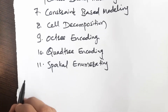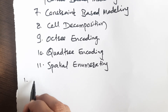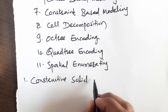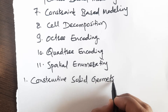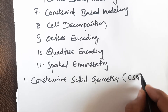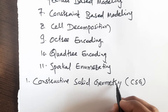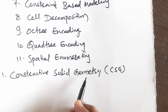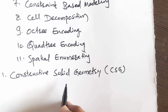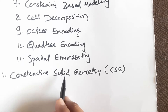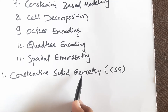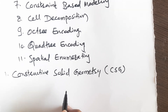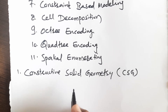The first method is Constructive Solid Geometry, also known as CSG. Constructive Solid Geometry is one of the most widely used approaches for solid modeling. In this method, primitives are used to design a geometry.